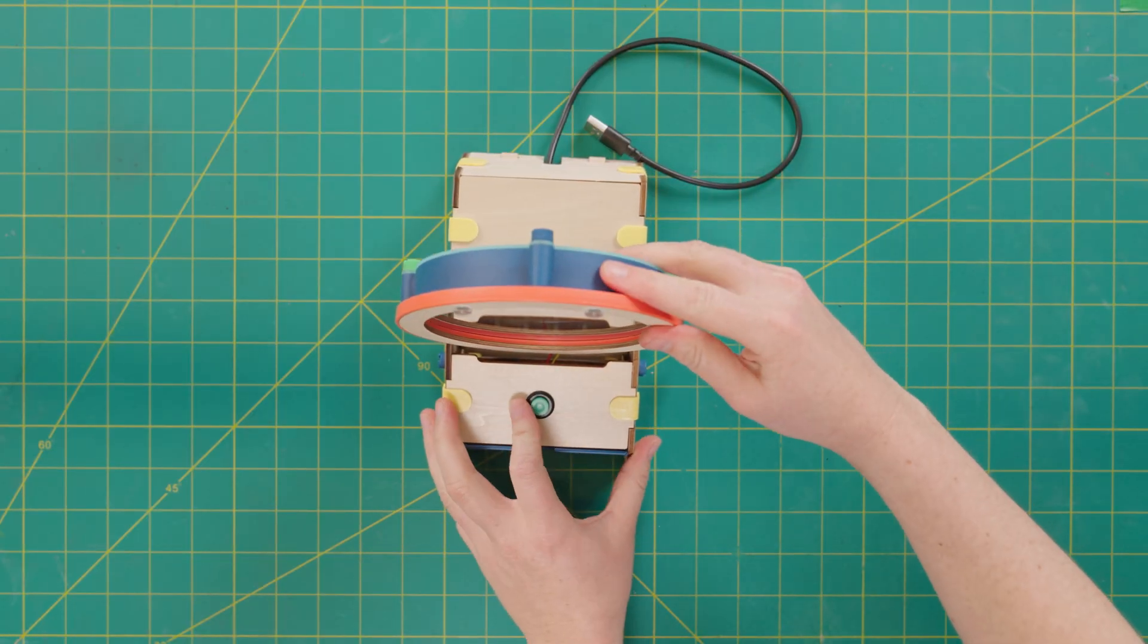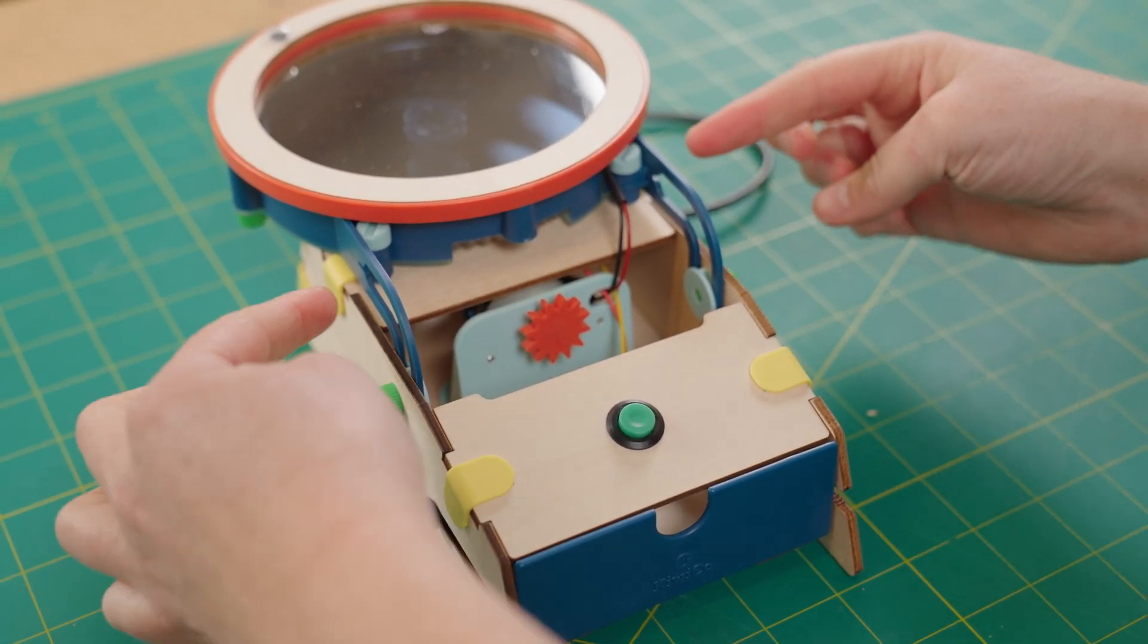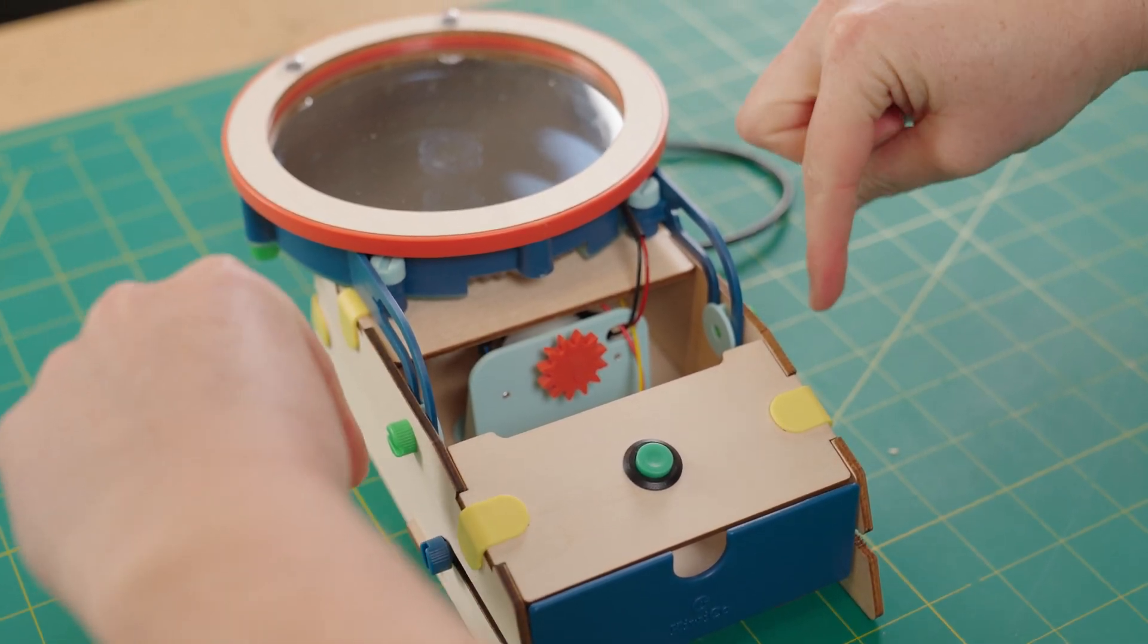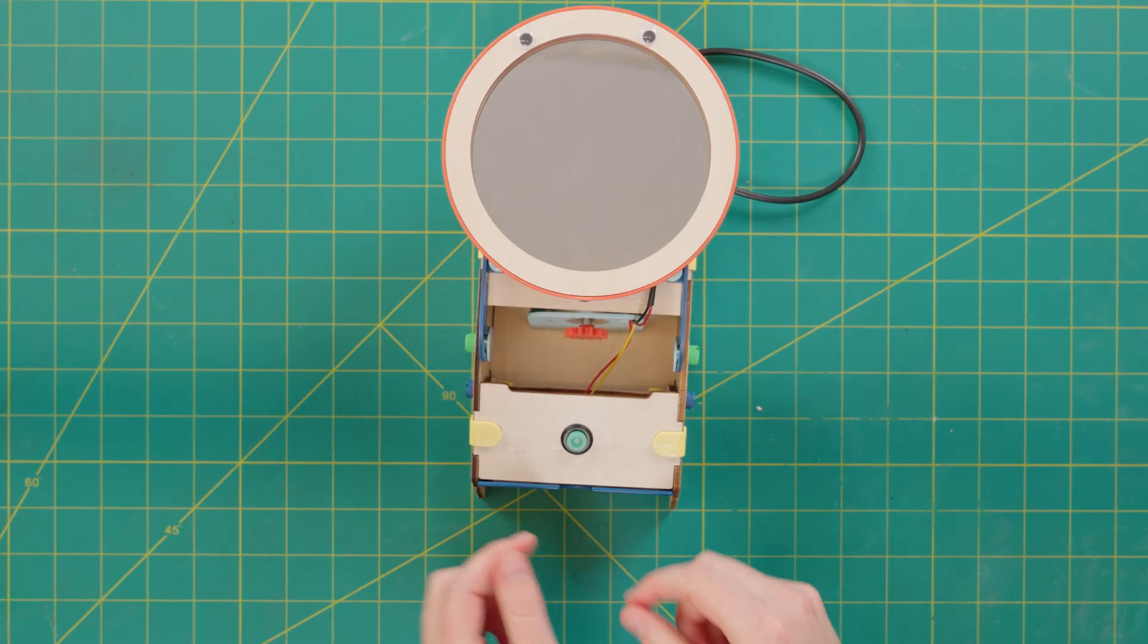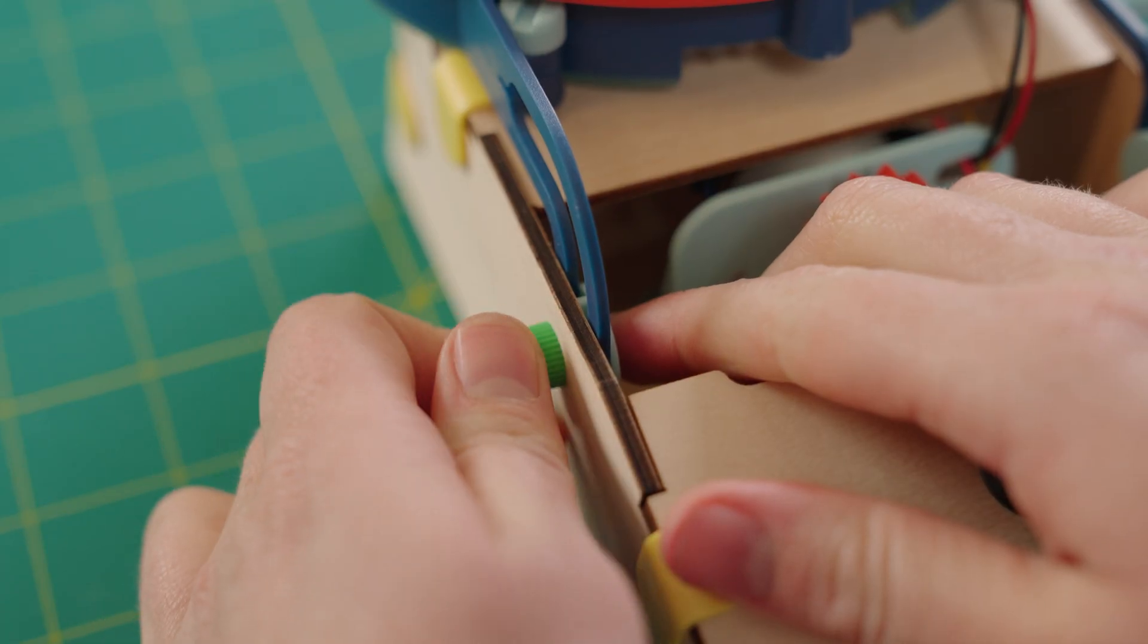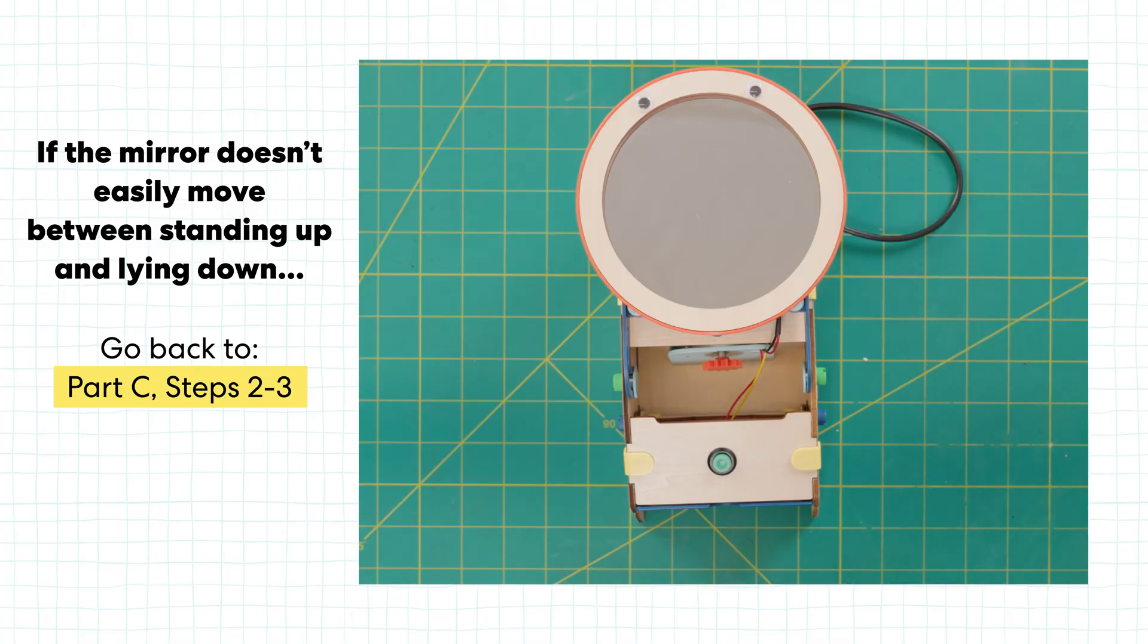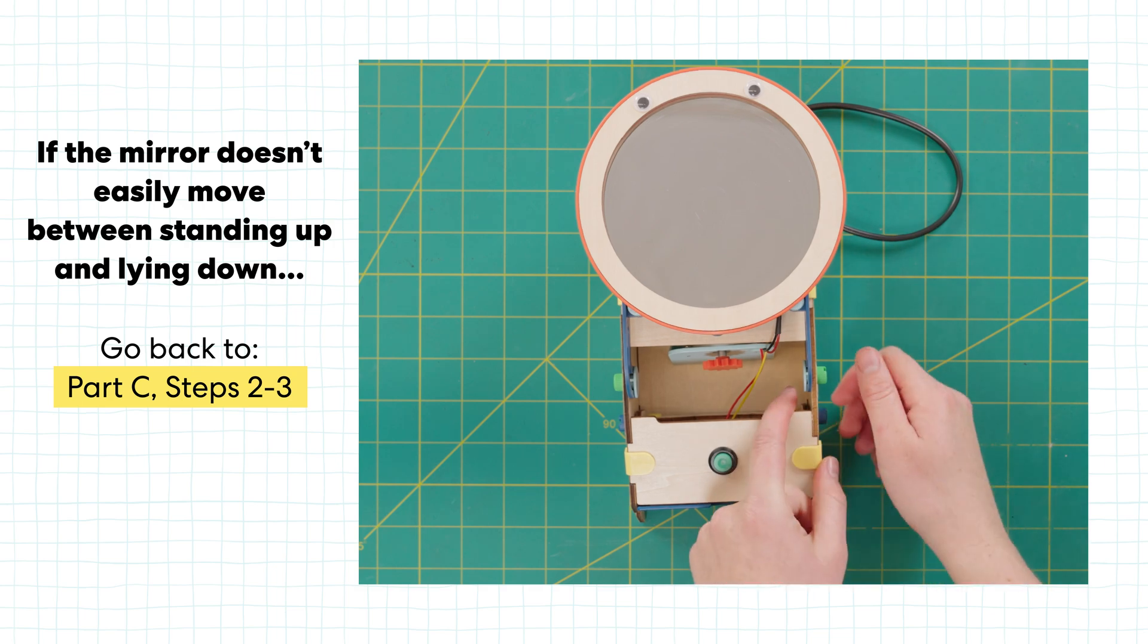If the mirror doesn't easily move between standing up and lying down, let's go ahead and double check that both of these legs are facing in this direction. Next, let's take another look at these blue brackets and make sure that the screws on either side are tightly screwed on. If you're still having a hard time, head back to part C, steps two and three, and make sure those brackets are fitting snugly into these holes in the base.